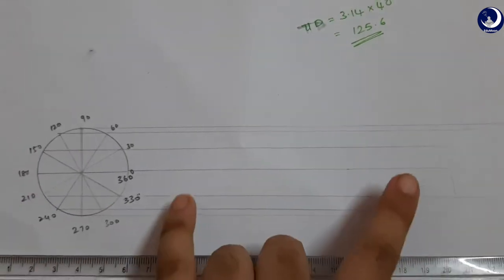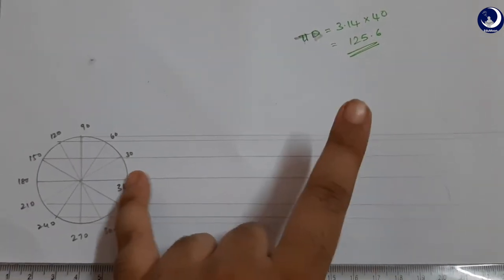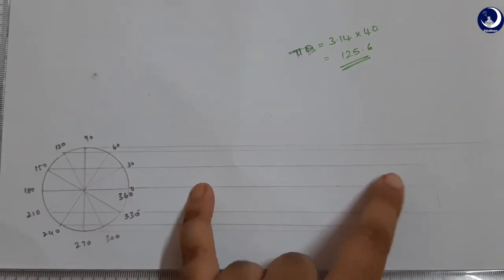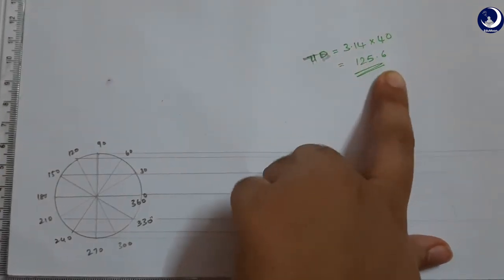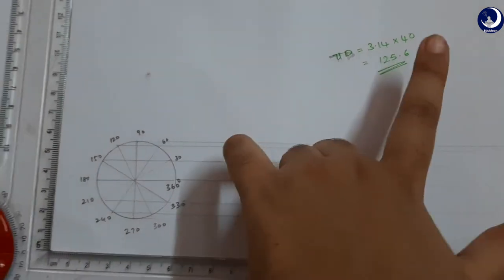Now here, you can take any point just a little away from the circle. You have to mark the circumference, that is pi times d, that is 3.14 into 40, that is 125.6 mm.